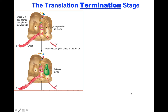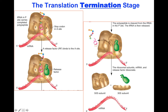How do we stop this process efficiently and accurately? The termination stage occurs when the stop codon enters the A site. It is recognized by a release factor — not a tRNA but a protein. When this binds, the polypeptide is released from the tRNA, the last tRNA exits, and the whole complex disassembles. The small subunit and the large subunit come apart, the release factor is released, the messenger RNA is released, and it can be used again.